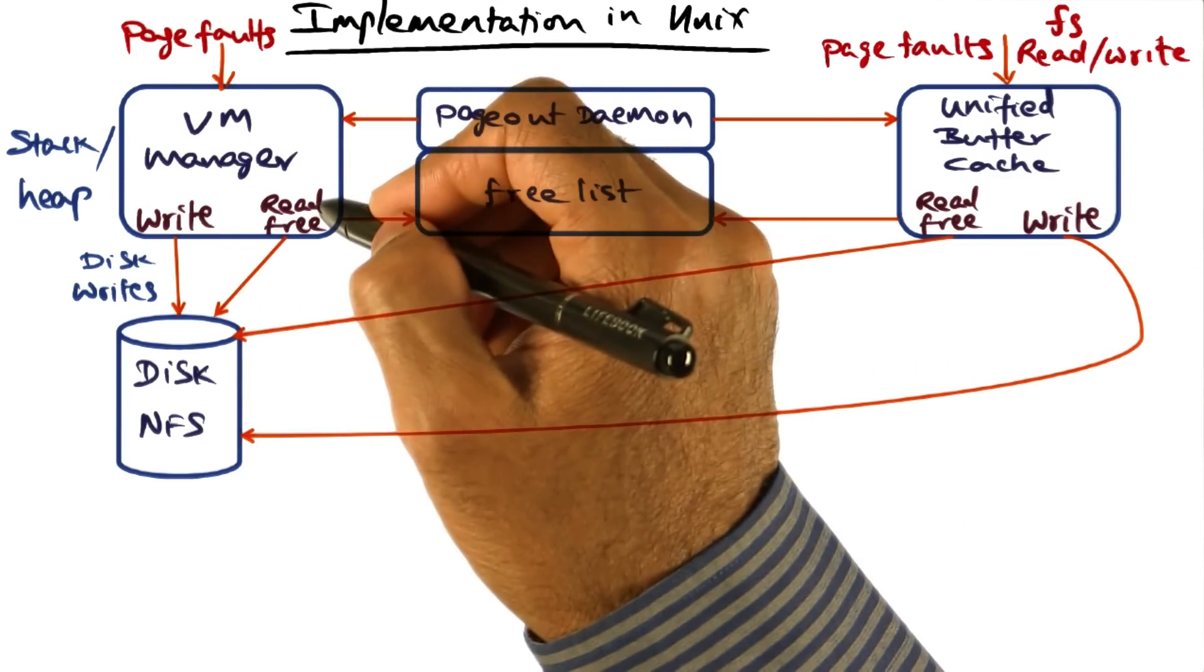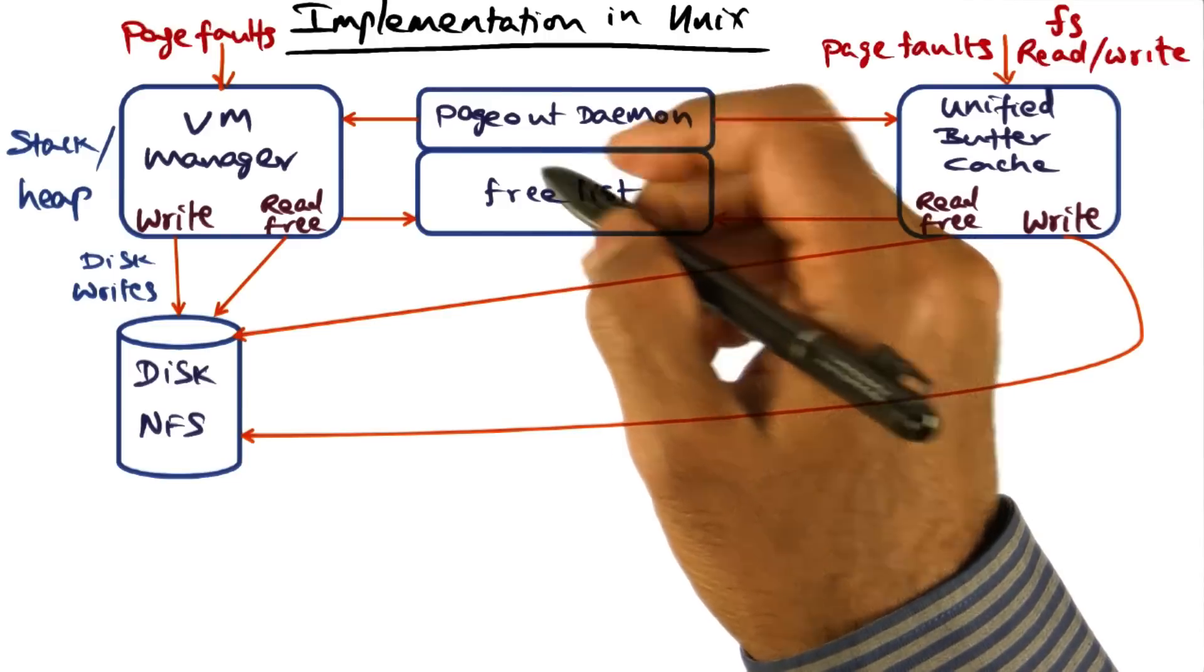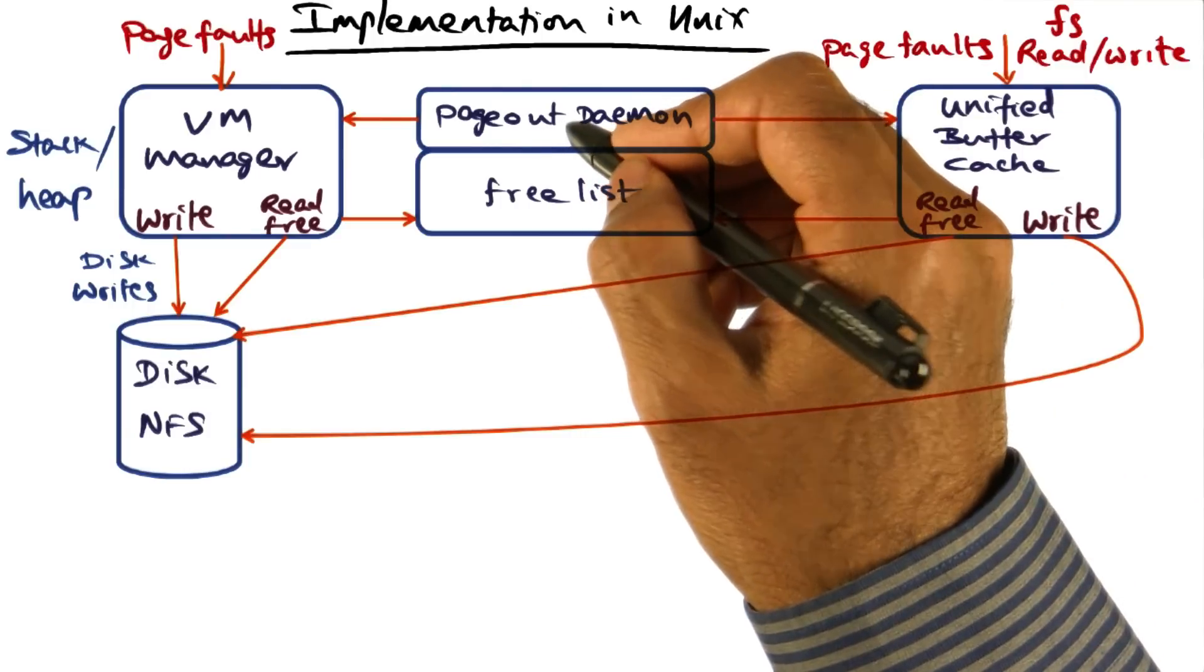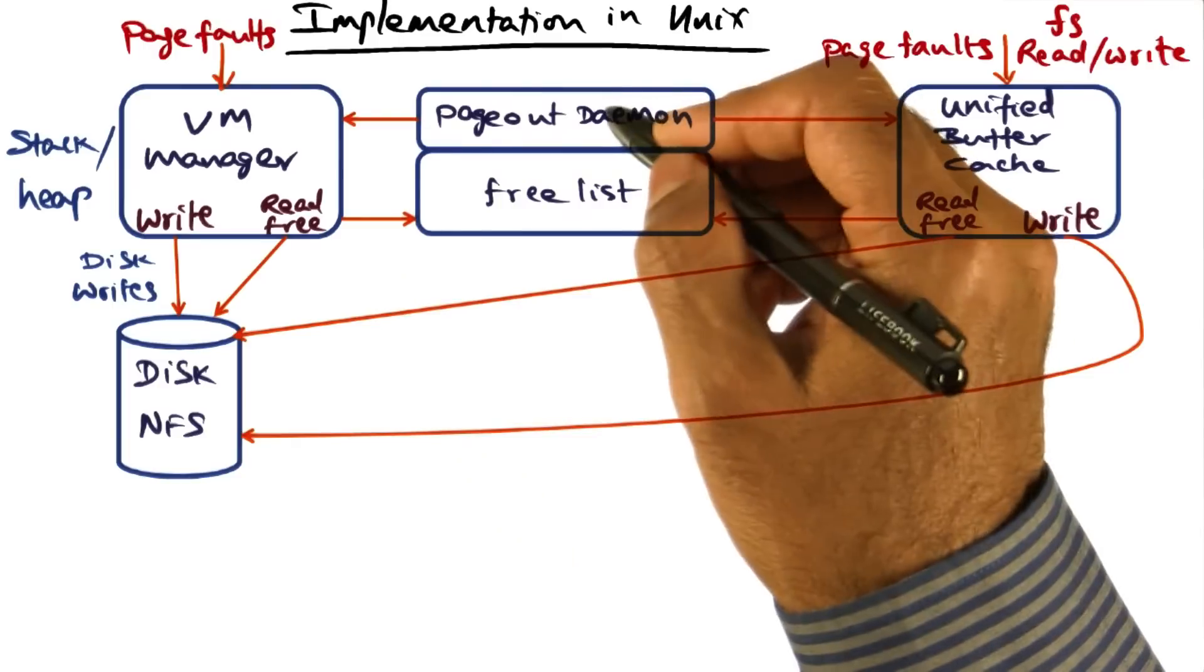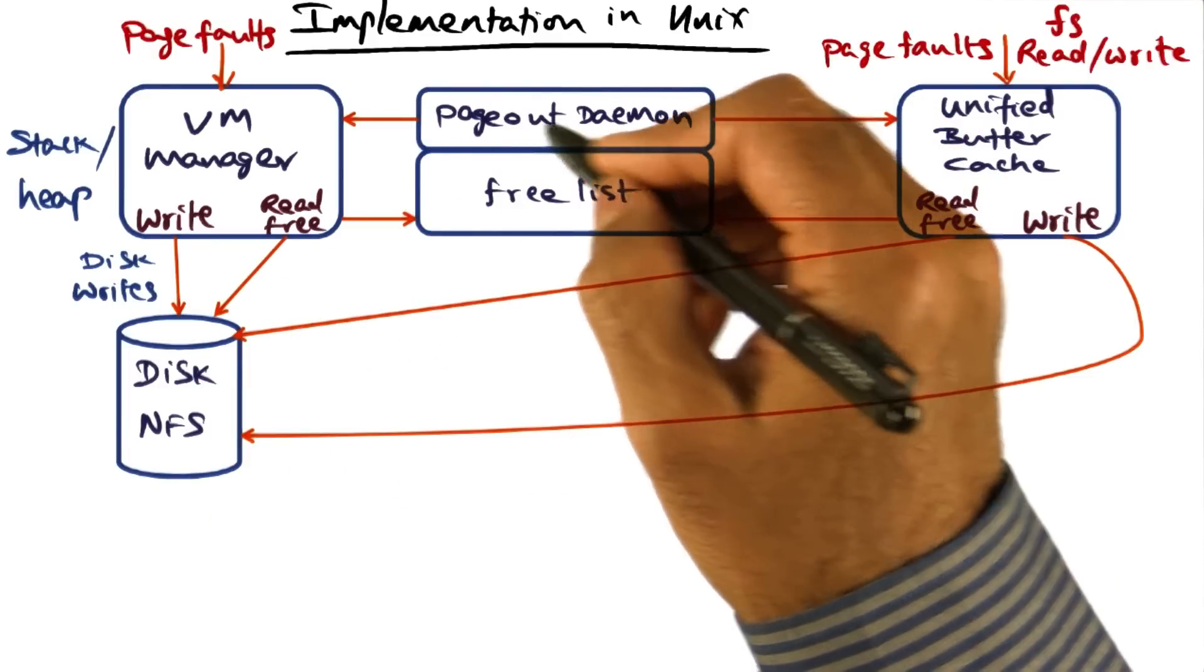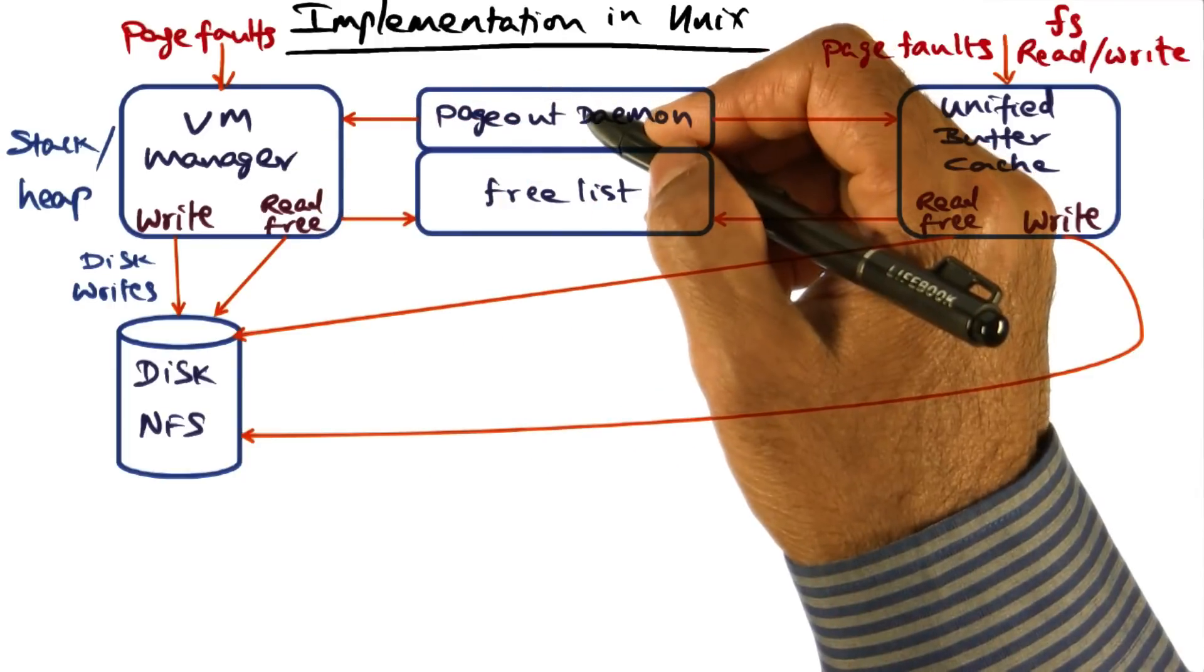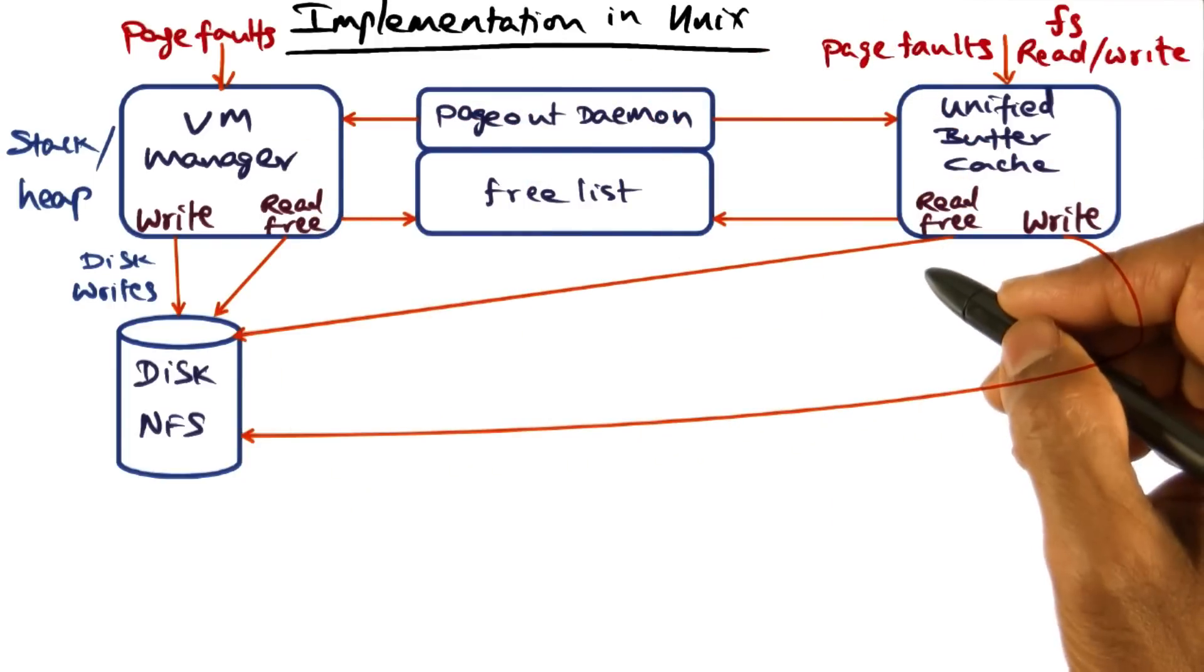And when a physical page frame is freed, you throw it into the free list so that it is available for future use by either the virtual memory manager or the unified buffer cache. And the page out daemon, its role is to look at every once in a while what are pages that can be swapped out to the disk so that you make room for page faults to be handled without necessarily running an algorithm to free up pages. So that's the structure of a memory management system.